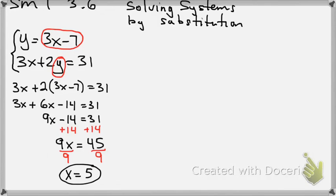So now that I know what x equals, I come back up here to this equation, plug in x, and find out what y equals. So y is going to equal 3 times 5 minus 7. So 15 minus 7 would be 8. So y equals 8.